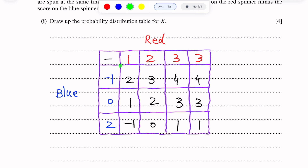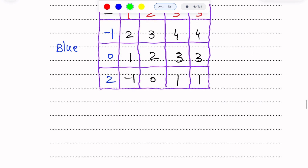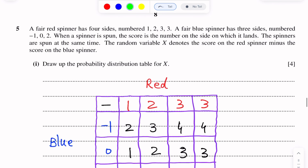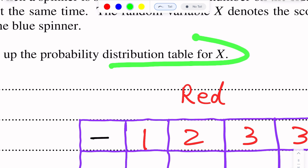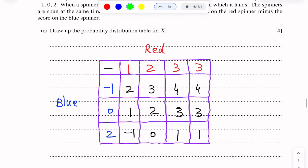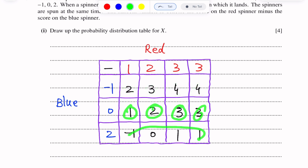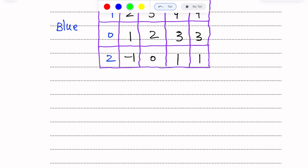These are the possible outcomes. These can be the values of X. Now we can draw the probability distribution table for X by taking help from this possibility diagram.